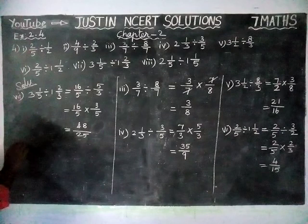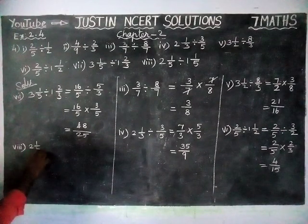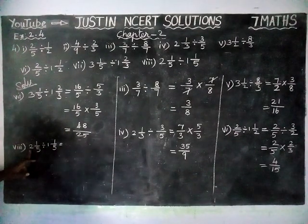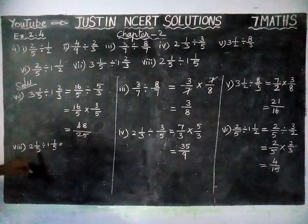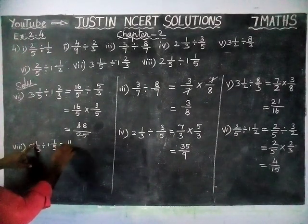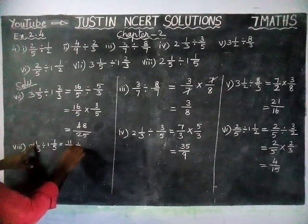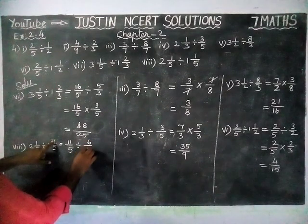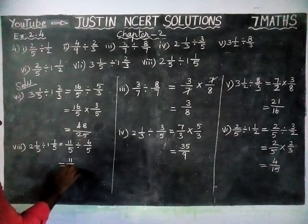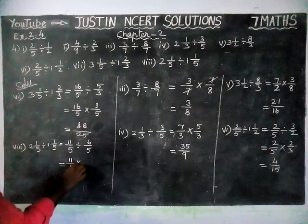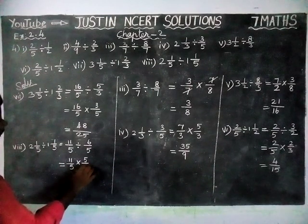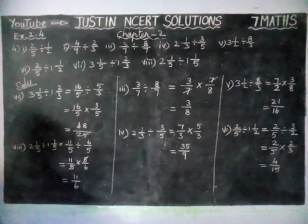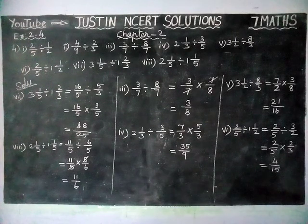Eighth question: 2⅕ divide 1⅕ is equal to — we have to convert into improper fraction. Whole part into denominator plus numerator: 2 times 5 is 10, 10 plus 1 is equal to 11/5. Divide — whole part into denominator plus numerator: 1 times 5 is 5, 5 plus 1 is equal to 6 divided by 5. So, 11/5 — we convert into reciprocal, this becomes multiplication — 5/6. Here, the 5s cancel, and remaining is 11/6. So, the answer for the 8th question is equal to 11/6. That's all students.